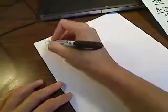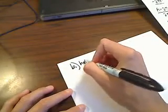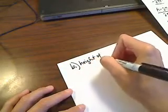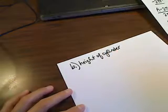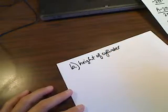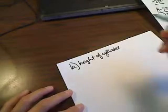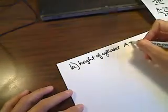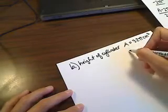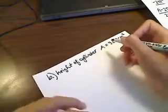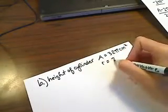In part b, they actually ask us for the height, they want to know what the height of the cylinder. So that formula on the other side is actually a surface area formula for, I believe, a cylinder. They want the height of a cylinder given that the surface area is 32 pi centimeters squared, and the radius is 2 centimeters.